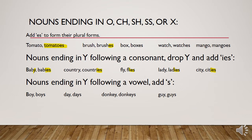Next, we have nouns ending in Y where it is followed by a vowel — like 'boy'. In this case we simply add 'S' at the end to make its plural form, similar to our first examples of 'cats' and 'newspapers'. So this Y followed by a vowel just takes 'S' after it.